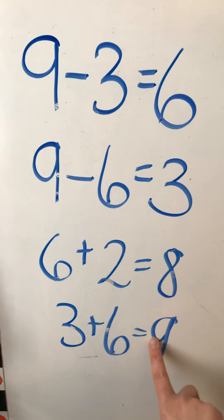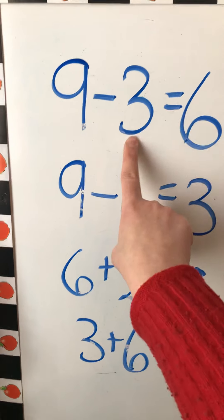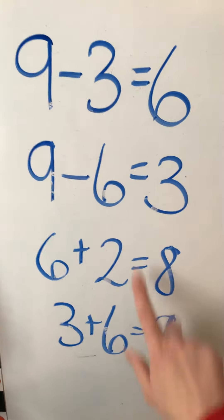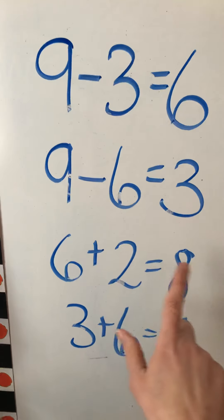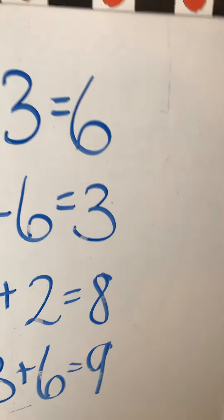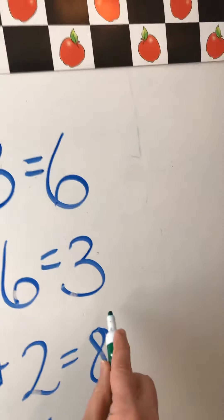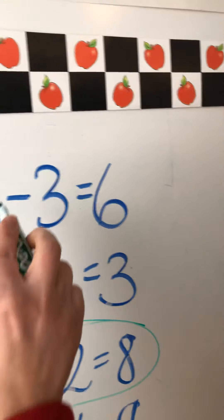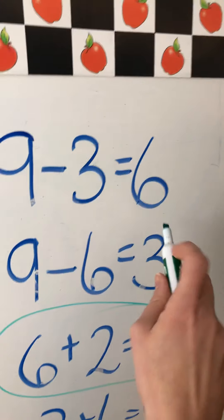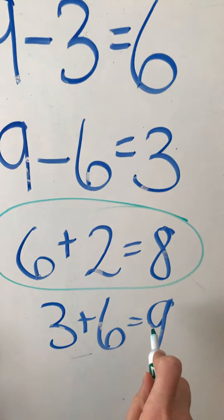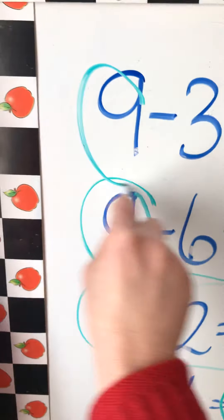And then 3 plus 6 equals 9. Well, 3, 6, 9 — these are all from the same family, either addition or subtraction version. But 6 plus 2 equals 8 — there's nothing there that makes it part of this other family. So this one does not belong. 9 minus 3 equals 6 and 9 minus 6 equals 3 are related. And 3 plus 6 equals 9. These are all in the 9 family — 9 subtraction and 9 addition.